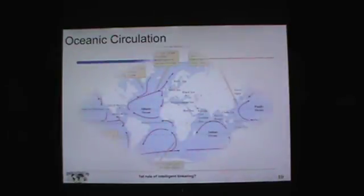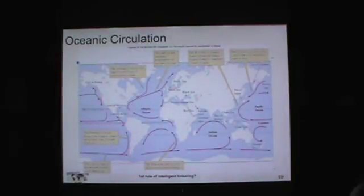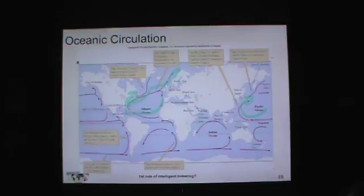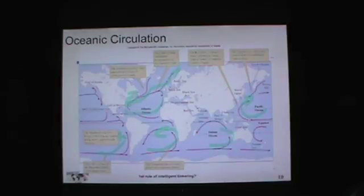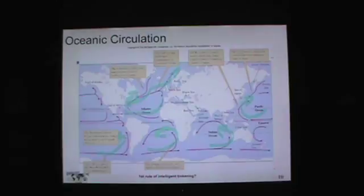Let's look at the circulation of the ocean. In the northern hemisphere, we have a clockwise rotation of these currents — the Gulf Stream current carrying warm water all the way up. In the southern hemisphere, we have counterclockwise rotation. Those currents circulate, carrying nutrients and heat. That distribution is very important; we'll see it when looking at aquatic life zones later in this lecture.